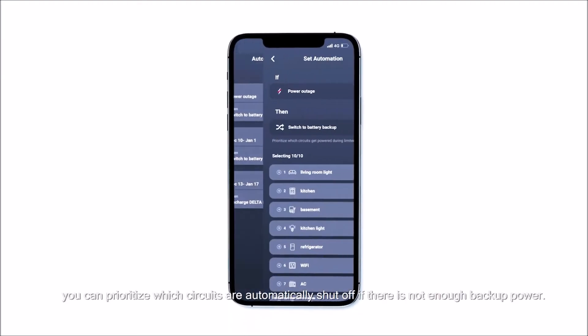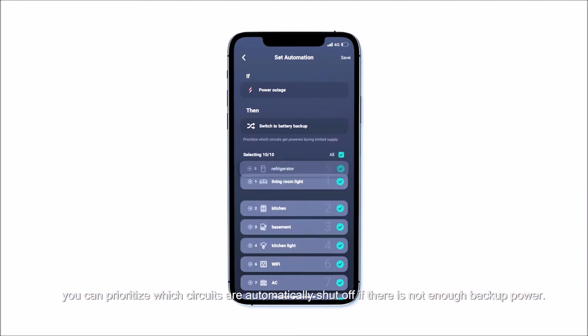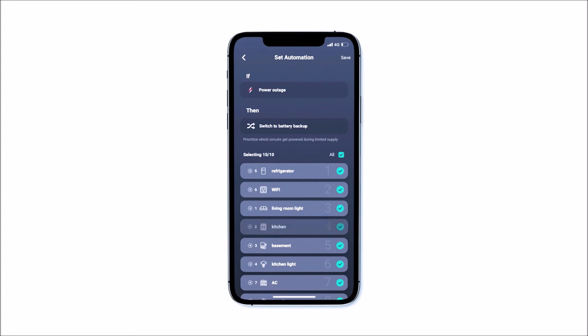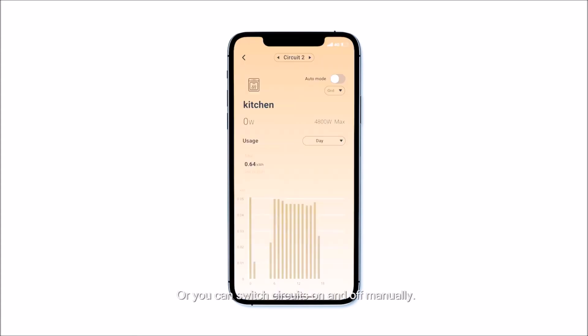In the EcoFlow app, you can prioritize which circuits are automatically shut off if there is not enough backup power. Or you can switch circuits on and off manually.